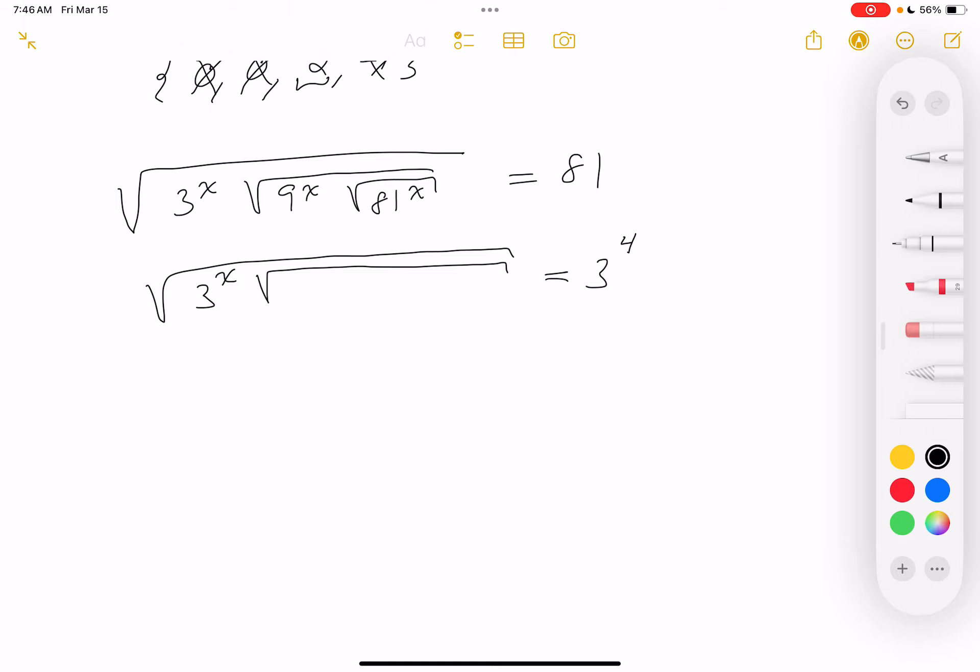And 9 is going to be 3 squared, so this would be 3 to the 2x. And again we just did 81, so this is going to be 3 to the 4x. Now here comes the part where a lot of people get confused—I'm taking the square roots of these things. Let me just do it one step at a time.